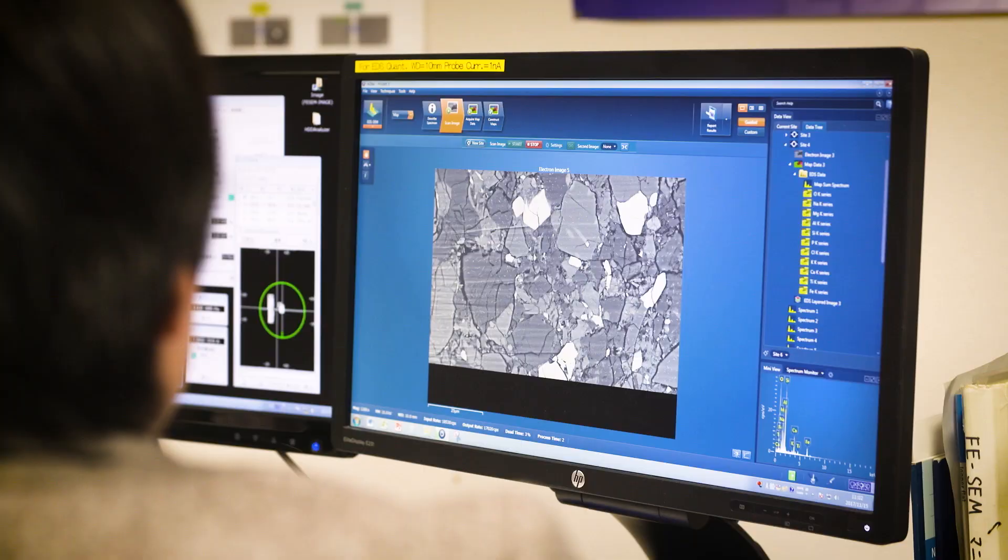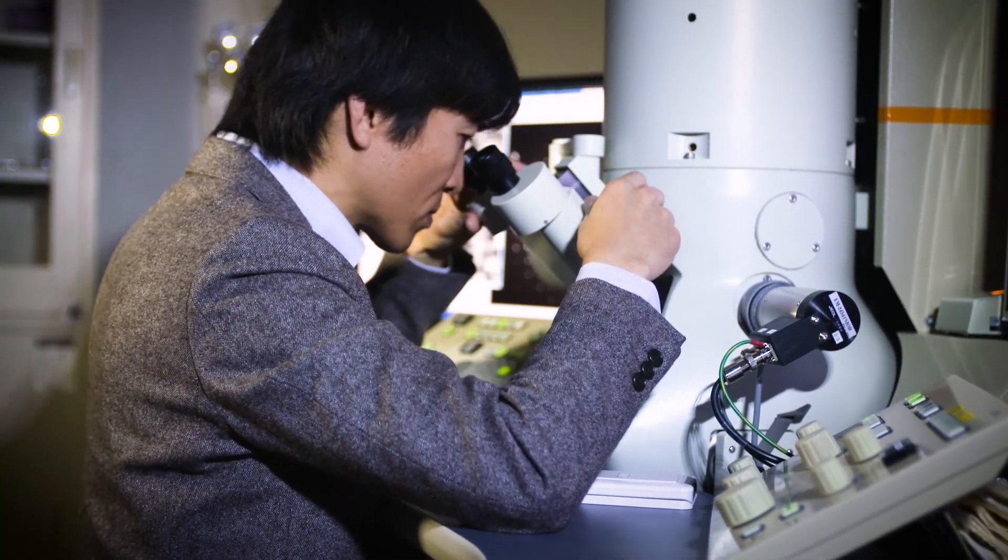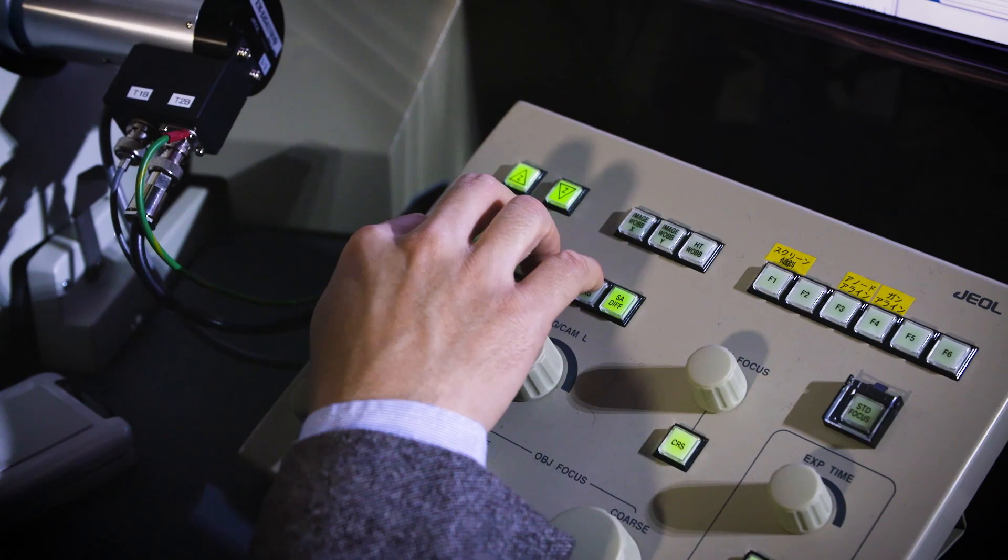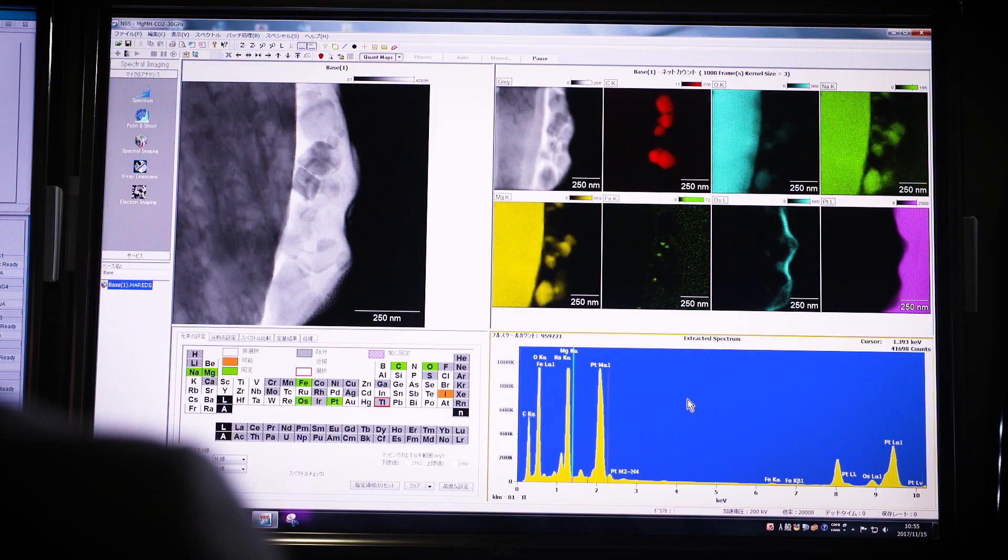Two types of electron microscopes, SEM and TEM, are important to investigate the surface and internal structure of the samples. Because of the absolute difficulty of direct visit to the deep earth's interior,